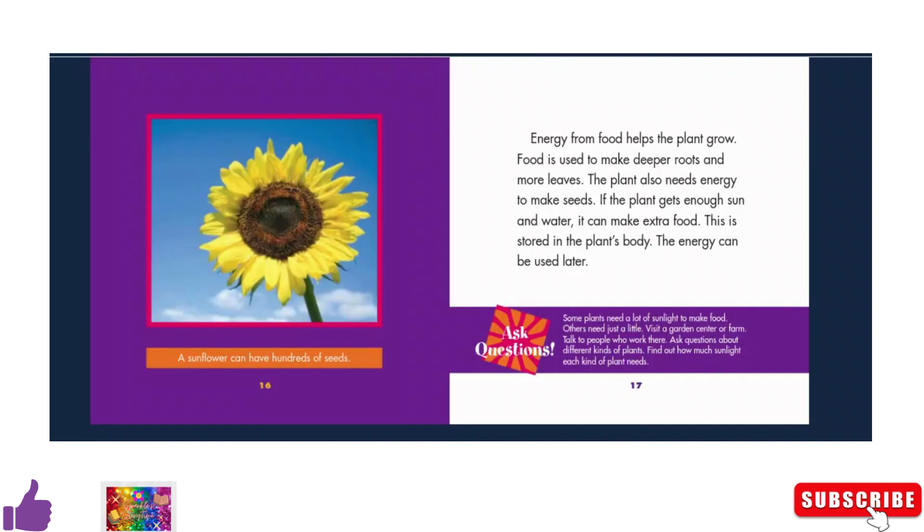A sunflower can have hundreds of seeds. Energy from food helps the plant grow. Food is used to make deeper roots and more leaves. The plant also needs energy to make seeds.